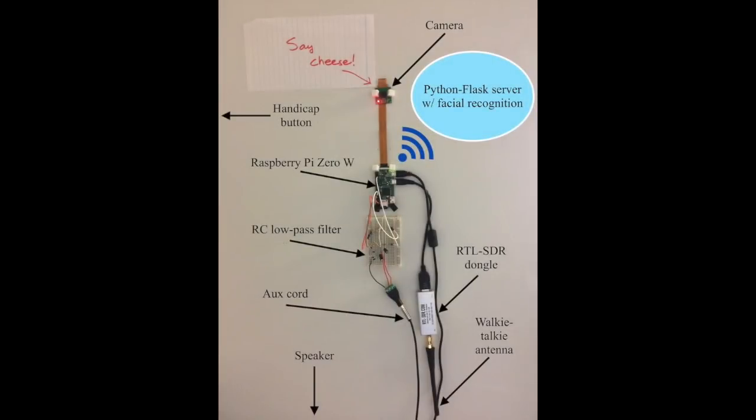So getting back to the button press, once a wireless signal is detected with the RTL-SDR dongle, the Pi uses the text-to-speech conversion program, eSpeak, to ask the user for a photo.